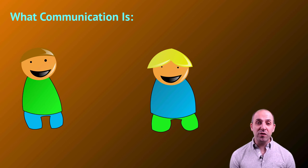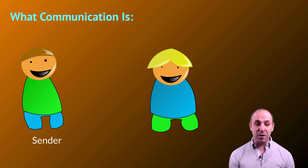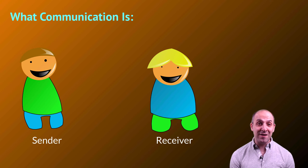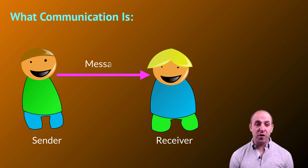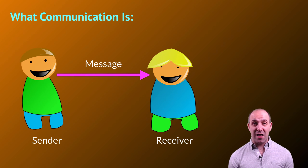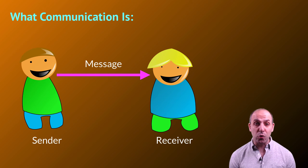When we talk about communication, we'll use the following framework. I've represented it with two cartoon people, but they don't have to be people — it just makes it easy for this example. We're going to call the entity sending the communication the sender, and the entity receiving it the receiver. The thing the sender sends to the receiver is called the message. In almost every biological example we look at, it will not be human beings — it will almost always be a molecule encoding a chemical message.